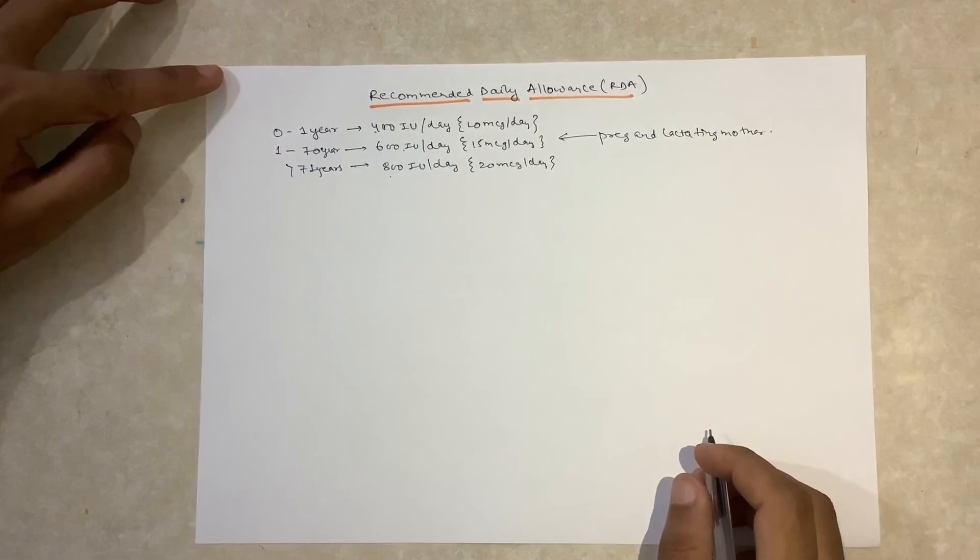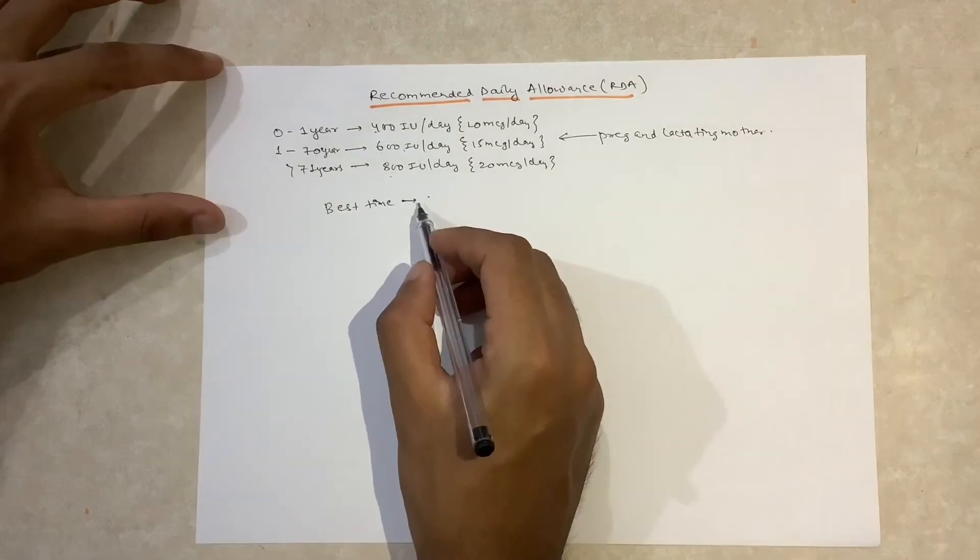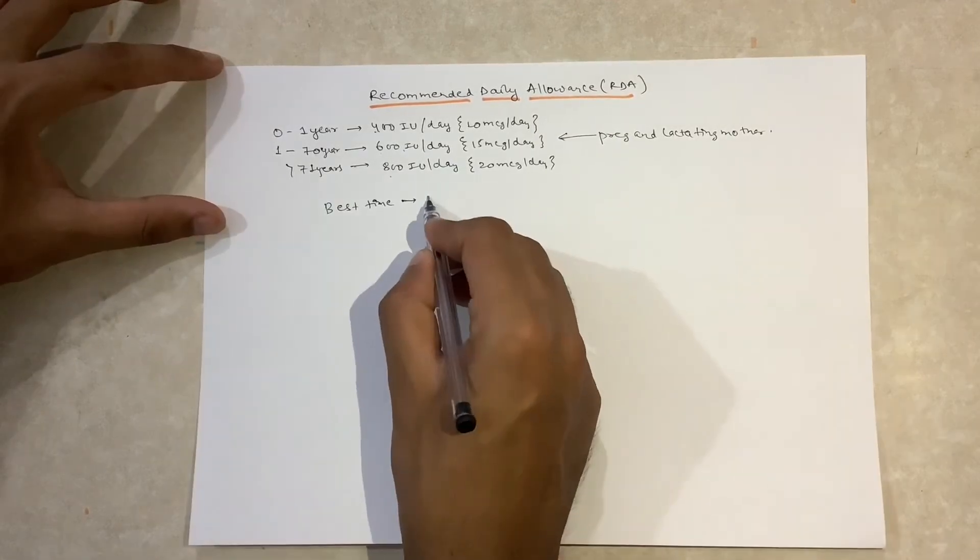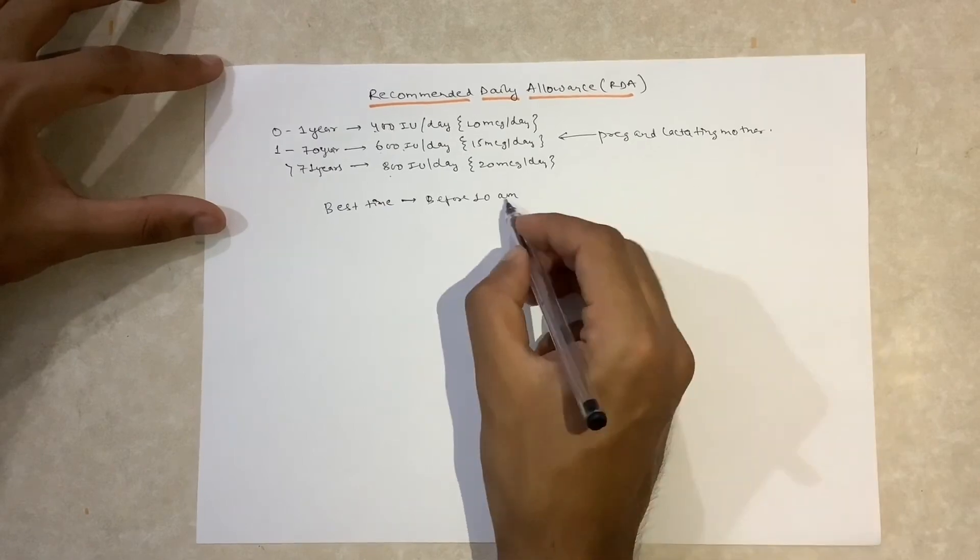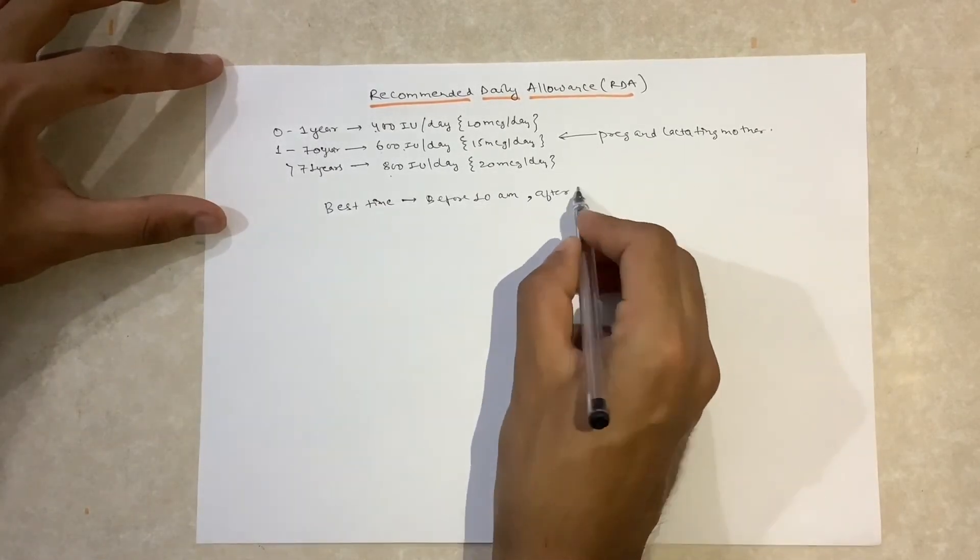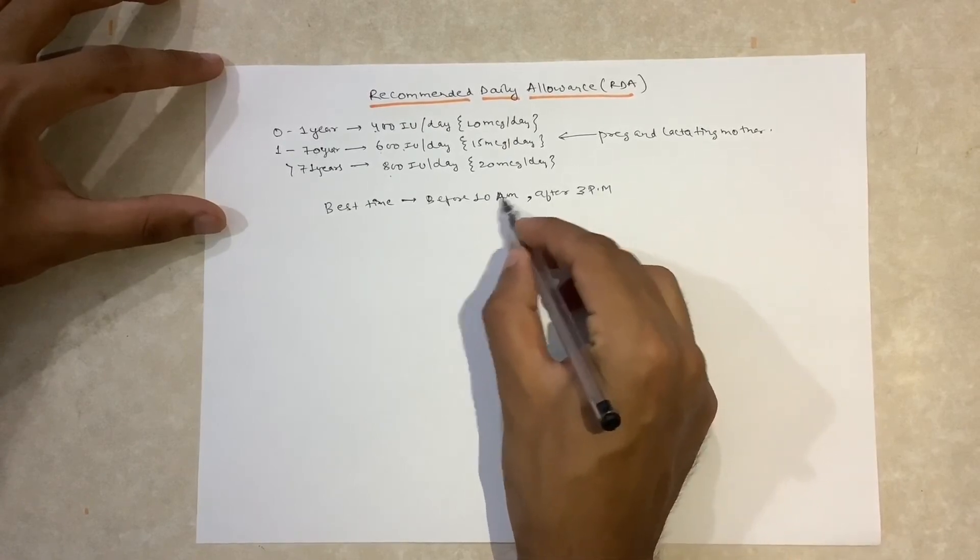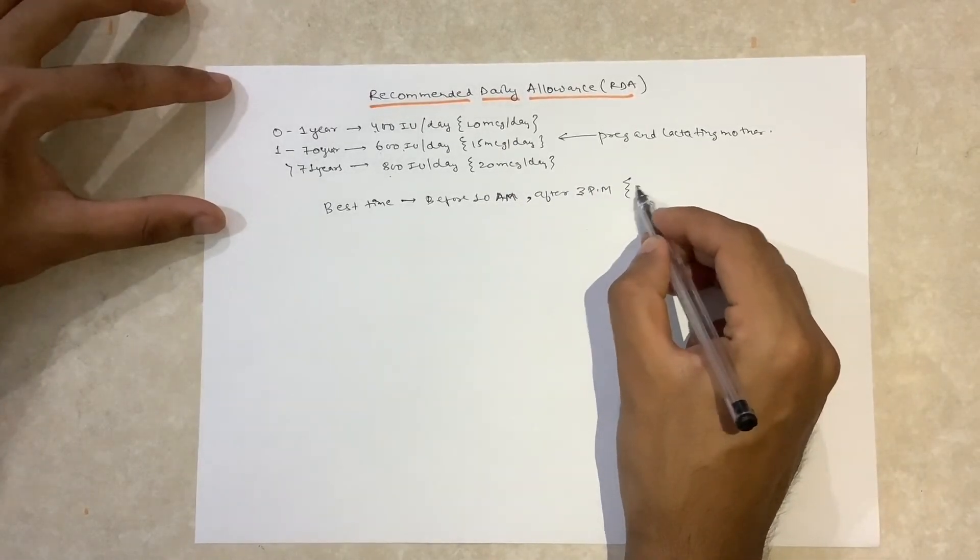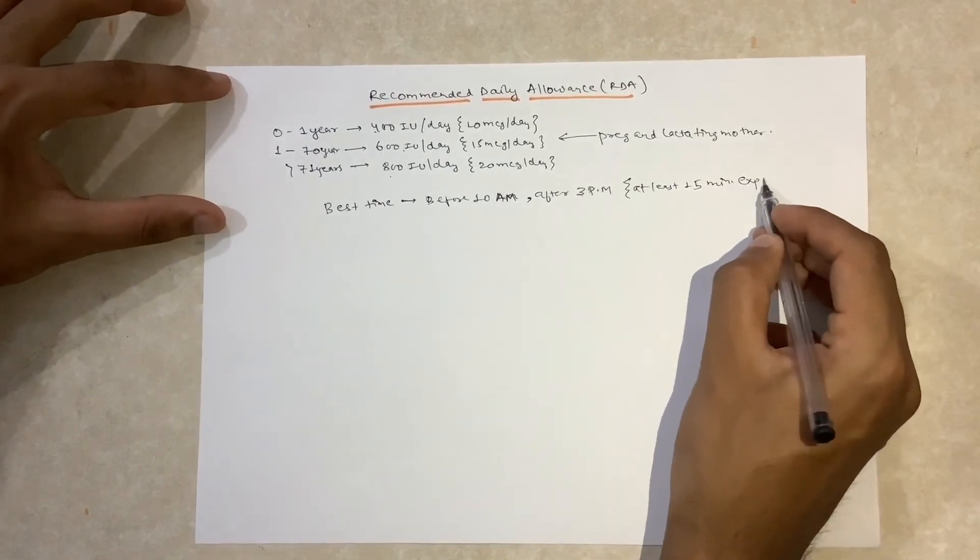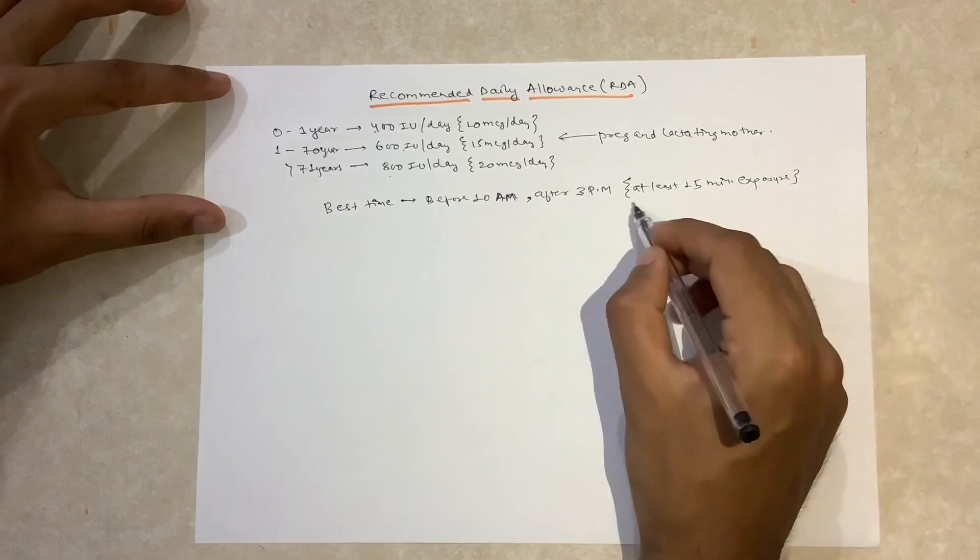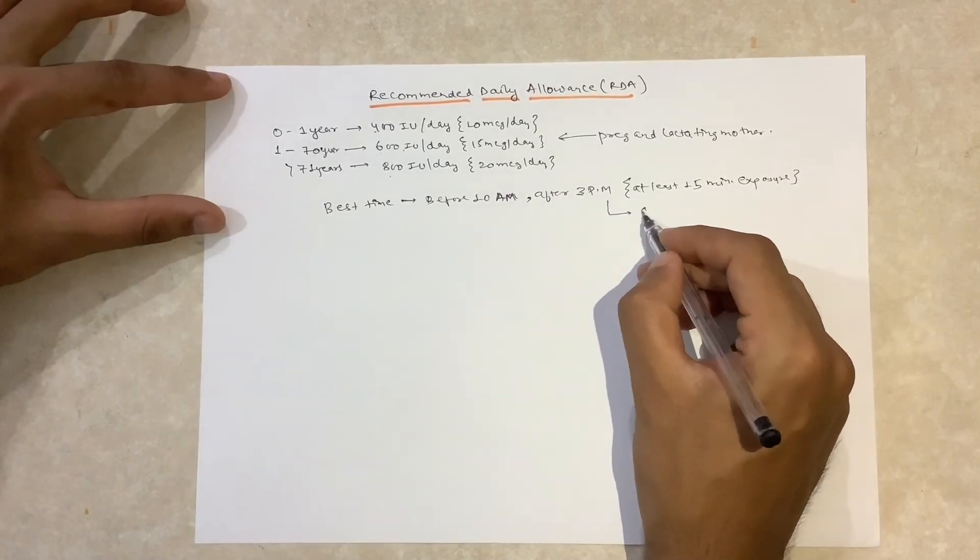Children less than 6 months are exclusively breastfed, and as we know mother's breast milk is deficient in vitamin D, we need to expose the child to sunlight. The best time for sun exposure is before 10 a.m. and after 3 p.m., with at least 15 minutes of exposure required. The sunlight present in this period is known as safe sun.